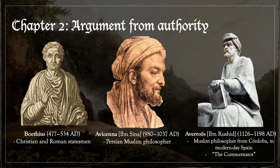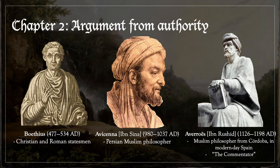Avicenna, who in Arabic is called Ibn Sina, lived from 980 to 1037 AD. He was a Persian Muslim philosopher, and was wildly influential on medieval Western Christian philosophy after his works were translated into Latin. Likewise, Averroes was also a Muslim philosopher. Averroes is called in Arabic Ibn Rushd. He lived from 1126 to 1198 AD. He was highly critical of Avicenna. He was born in Córdoba in modern-day Spain, and St. Thomas refers to him by the affectionate nickname 'the Commentator', because Averroes was famous for having written large and many commentaries on Aristotle's works.